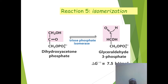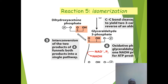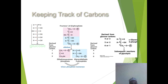Reaction 5 is isomerization, where dihydroxyacetone phosphate is isomerized into glyceraldehyde-3-phosphate by triose phosphate isomerase. The delta G standard is +7.5 kJ per mole. We are tracking the carbon atoms: the pink represents the dihydroxyacetone phosphate cleavage product, while blue represents the glyceraldehyde-3-phosphate product.